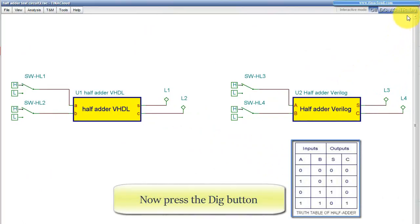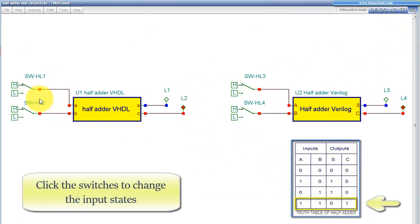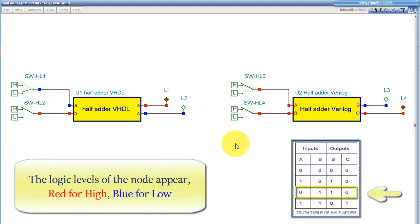Now press the Dig button. Click the switches to change the input states. The logic levels of the node appear. Red for High, Blue for Low.